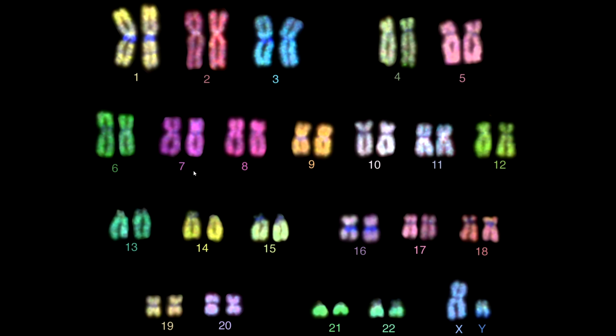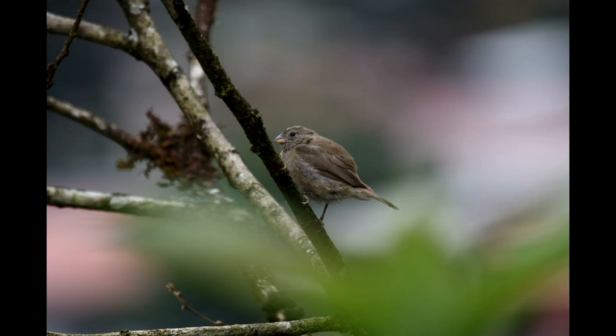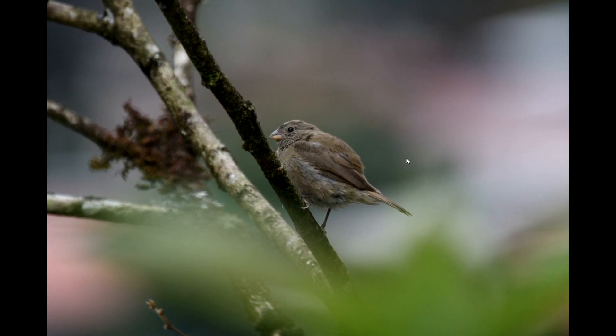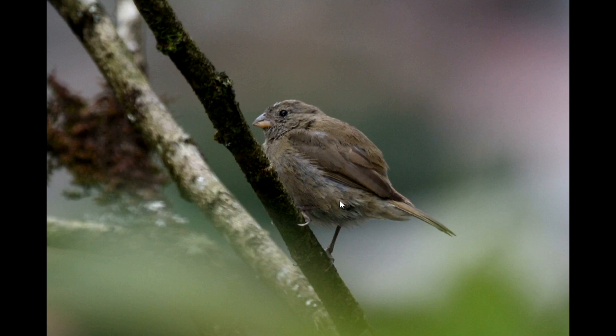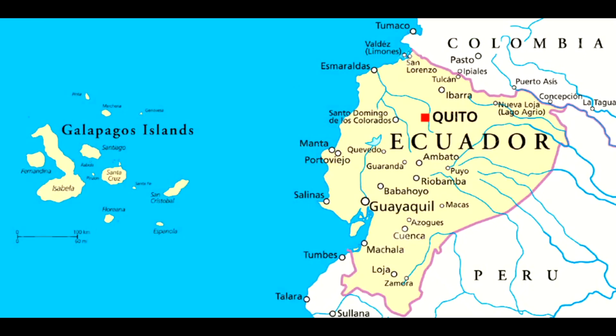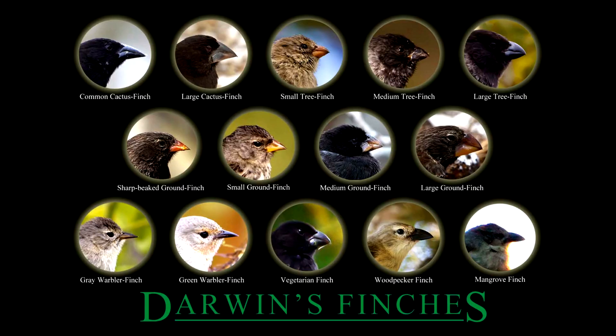However, during reproduction, whenever DNA is replicated, there's also a chance that genetic mutations can occur. Today we know through genetics that the Galapagos finches are very closely related to a little dull-coloured grass finch found throughout South America. This one species of bird found its way to the Galapagos Islands and evolved into all 13 species, with differences as clear as these.